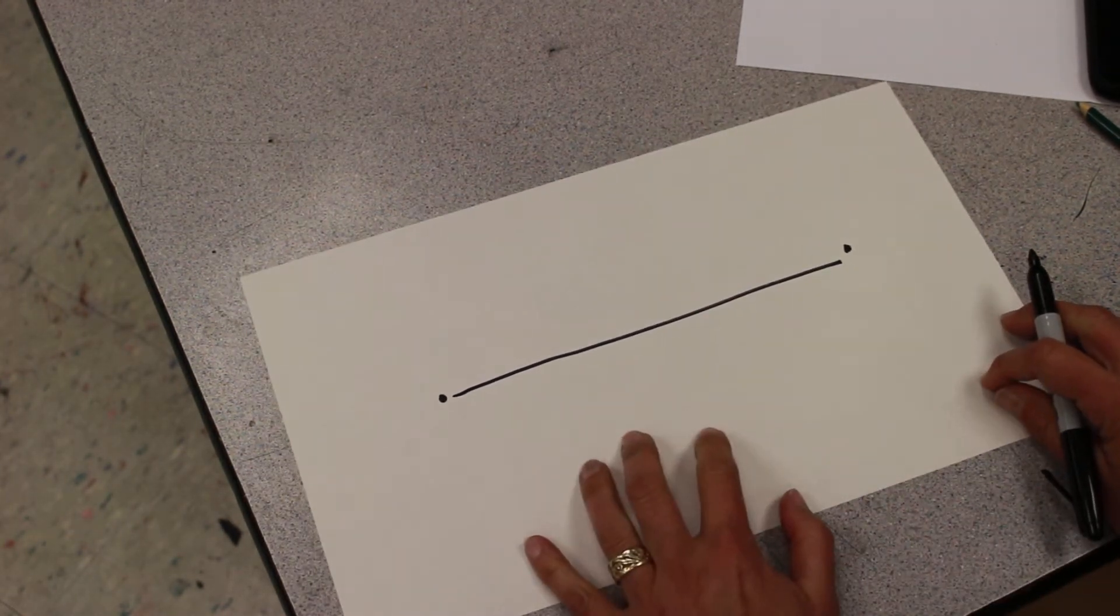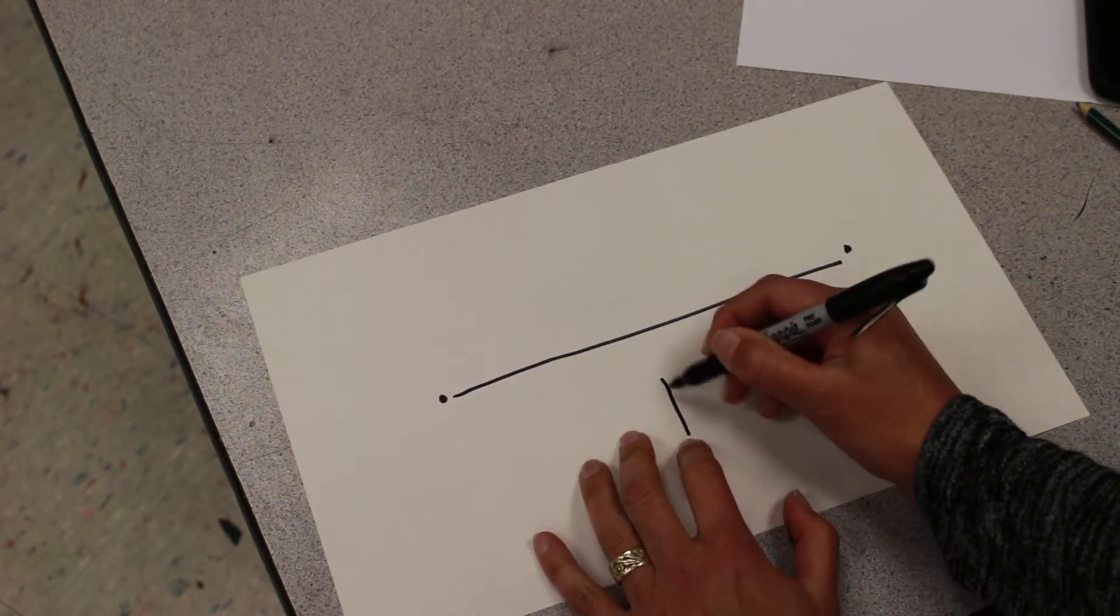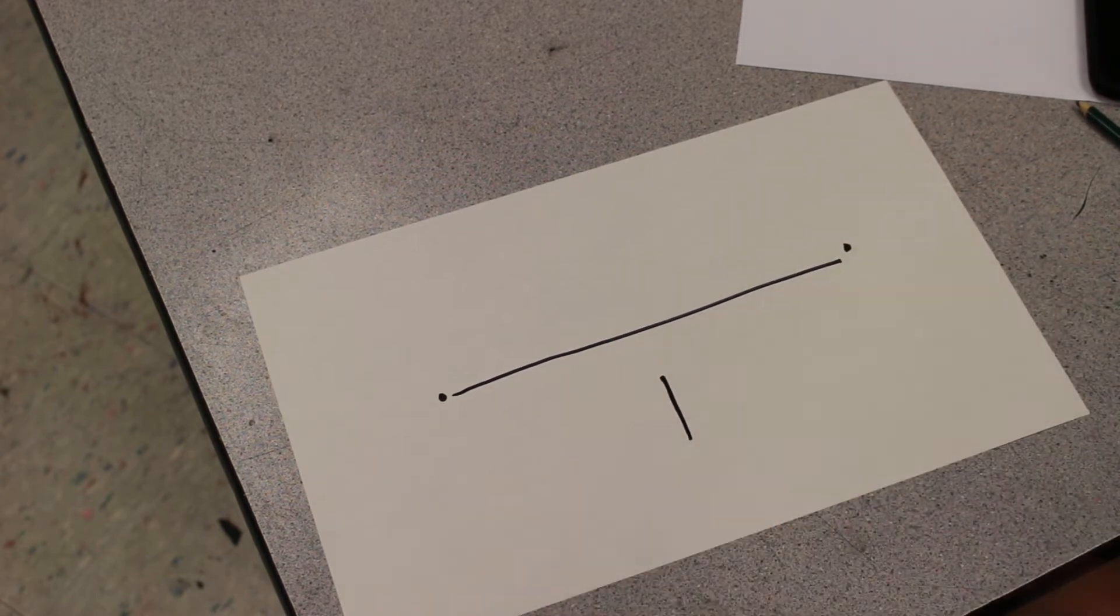To make a box in two-point perspective, if you're below the horizon line, you draw a line first. That represents the corner of the box.